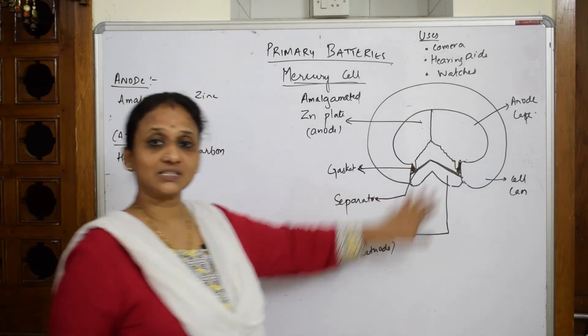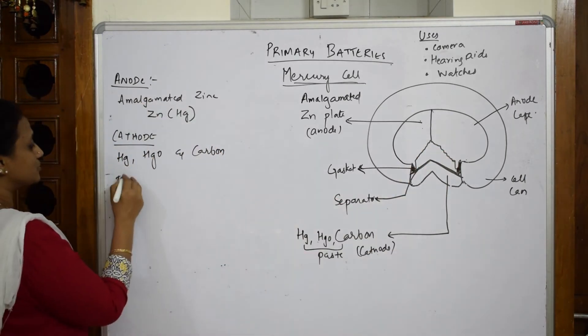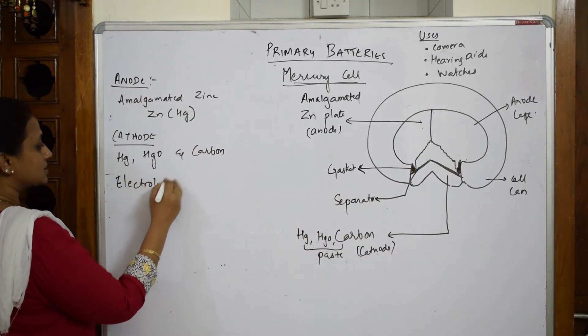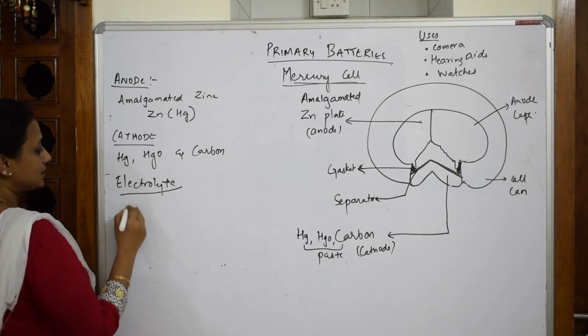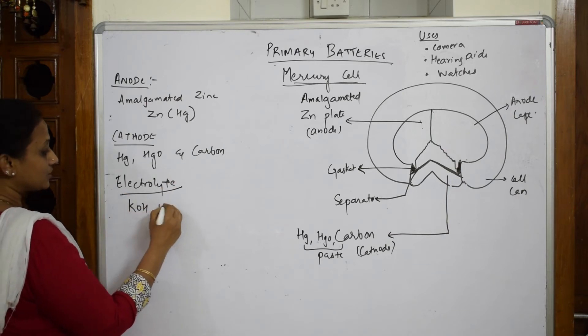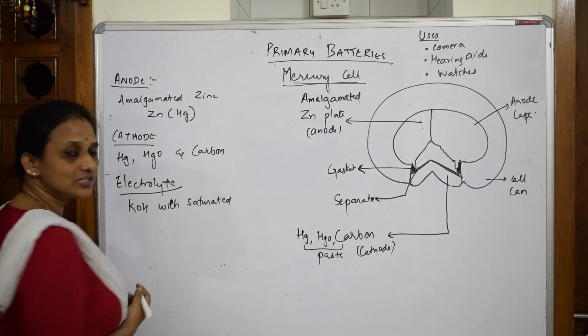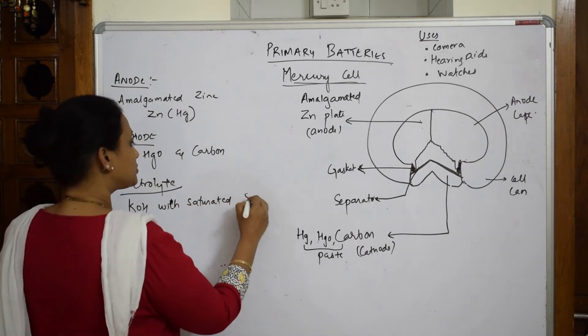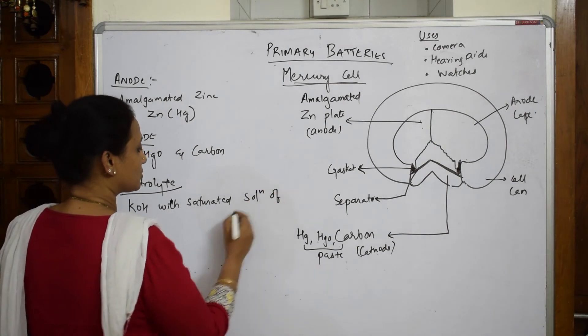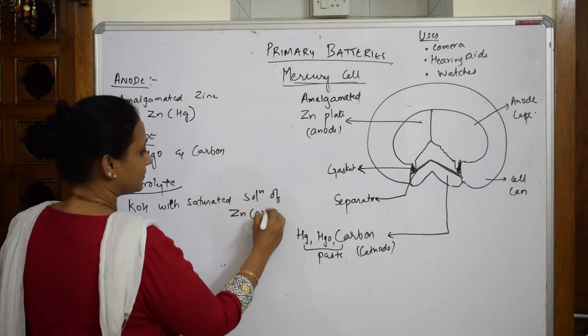Let's see the electrolyte which is present in this. The electrolyte which I'm going to take is potassium hydroxide with saturated solution. You very well know what saturated solution is - saturated solution of zinc hydroxide.